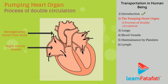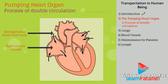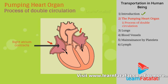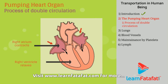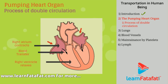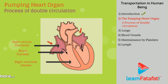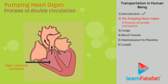The right atrium relaxes to collect deoxygenated blood coming from the body. The right atrium contracts and the right ventricle relaxes, transferring deoxygenated blood to the right ventricle. The right ventricle then contracts, forcing blood to be transferred to the lungs.